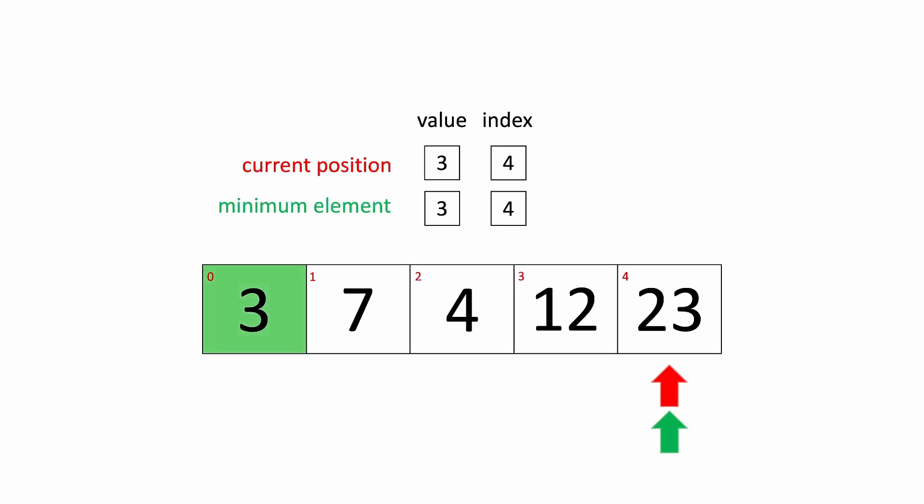And now we know 3 is at the correct position in this array. Now we get ready for the next iteration of this array. We move the current position and the minimum element pointer to index 1. Is 4 less than 7? It is, so we move the current minimum element pointer to index 2.